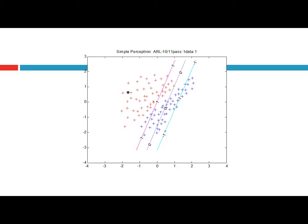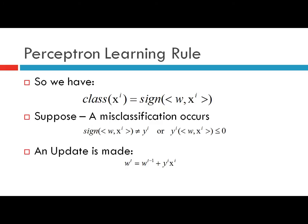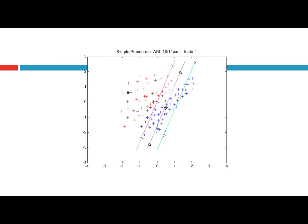A second training instance comes in and this decision boundary correctly classifies that training instance, and therefore no update to the decision boundary is made. The next training instance is shown by the green circle or green disk. This decision boundary exactly correctly classifies this instance, and therefore no update is made because the condition is satisfied: sign of W transpose times xi equals yi, and therefore no update to the weight vector is made.